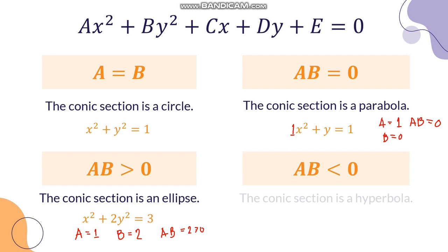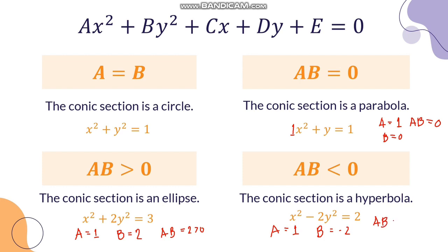If AB is less than 0, then the conic section is a hyperbola. For example, A is 1 and B is negative 2, so multiplying gives negative 2, which is less than 0. Going back to the standard form of hyperbola, both X squared and Y squared appear but the operation is subtraction, meaning one of the values must be negative, which is why the product of the coefficients gives a negative number.